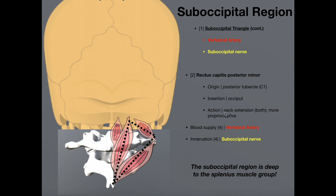For the most part, we just say it's a neck extensor, but just understand that it's very weak. Hopefully this video gave you a good understanding of the parts of the suboccipital region.